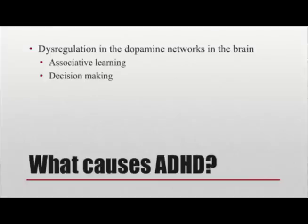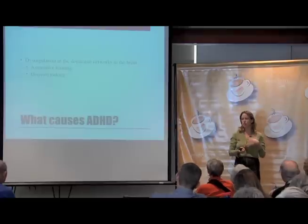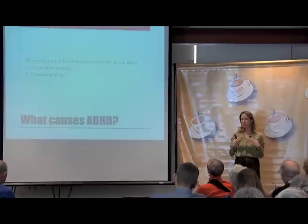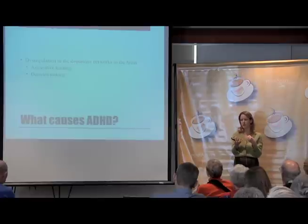The other thing dopamine is important in is decision making — how do I decide if I should do this or that? Choosing a behavior or a particular path to take is involved in computations that dopamine regulates. Dopamine tells you how much you like something, how much it's going to cost to get it, and those kinds of factors in the cost-benefit analysis we do when making a decision are regulated by dopamine.